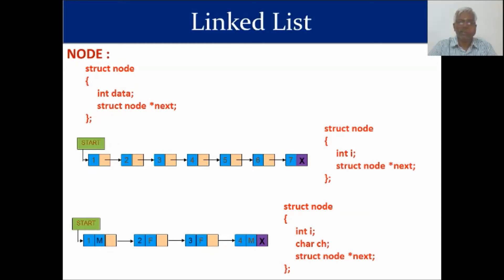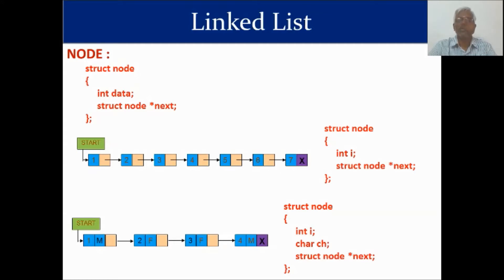A pointer is always declared with the star operator. An integer pointer stores the address of an integer variable, a float pointer holds the address of a float variable. Similarly, here the pointer is pointing to a node, so the pointer must be of data type 'struct node'. That's why the second part is declared as 'struct node star next'.